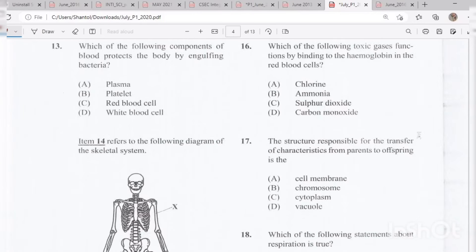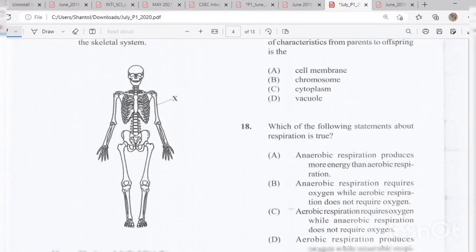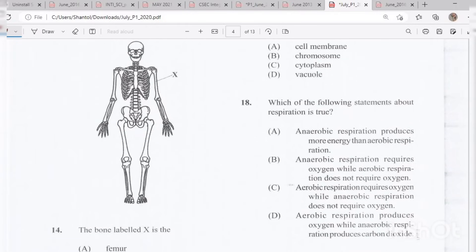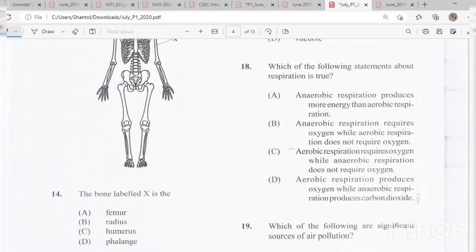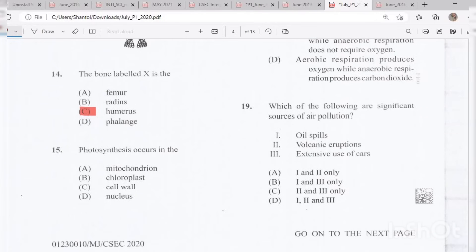Number 13: Which of the following components of blood protects the body by engulfing bacteria? The answer would be D, white blood cells. Number 14: Item 14 refers to the following diagram of the skeletal system. The bone labeled X is C, humerus. Item 15: Photosynthesis occurs in B, chloroplast, because you know that's where we find chlorophyll.